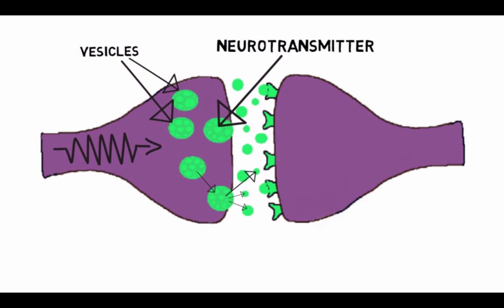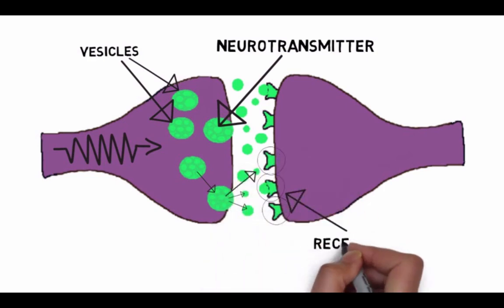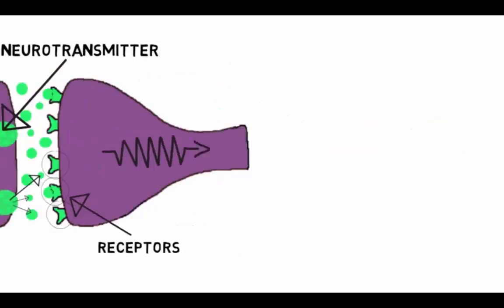Once they are in the synaptic cleft, neurotransmitters interact with receptors on the postsynaptic membrane. They bind to these receptors and can cause an action to occur in the postsynaptic cell as a result. This action may involve increasing the likelihood that the postsynaptic cell will become activated and fire an action potential or decreasing it.